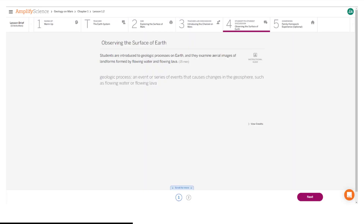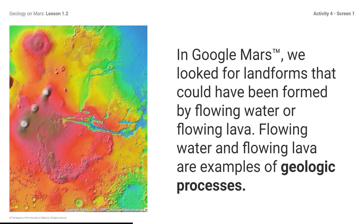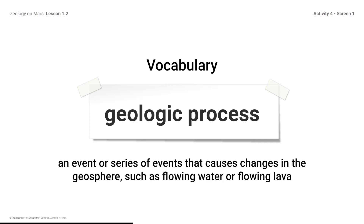Here is what your student screen looks like for this part of the lesson. In Google Mars, we look for landforms that could have been formed by flowing water or flowing lava. Flowing water and flowing lava are examples of geologic processes. Vocabulary — Geologic Process: an event or series of events that causes changes in the geosphere, such as flowing water or flowing lava.